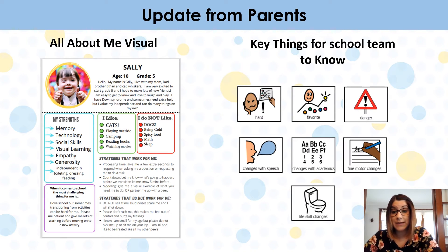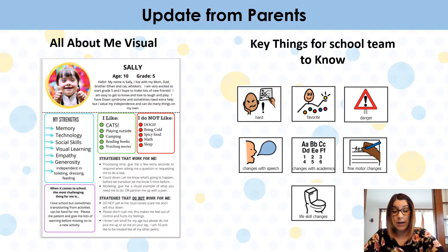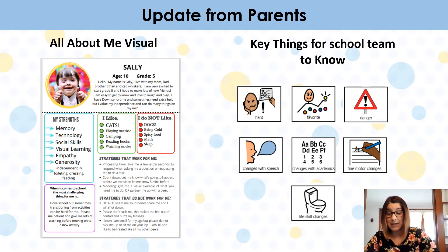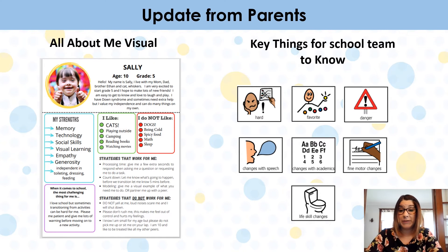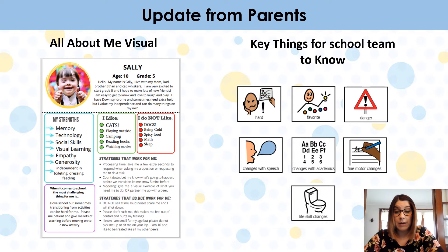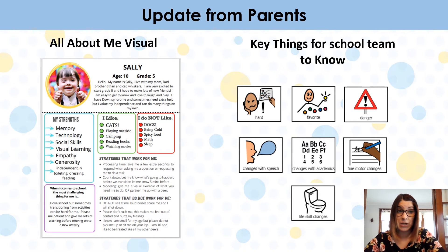Some key things to share with the school would be things that are hard for your child, some of their favorites, maybe safety concerns that have developed over the summer — like if they've been running away more. Have there been changes with speech, or with academics — maybe they now know their numbers up to 10? Have there been fine motor changes, like are they now holding a pencil? Are there any life skill changes, like are they using the bathroom by themselves? These are great things to share with the school team.